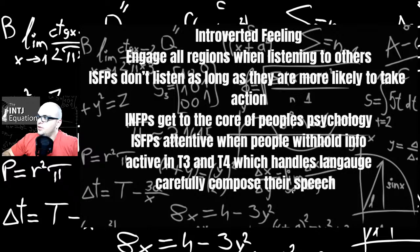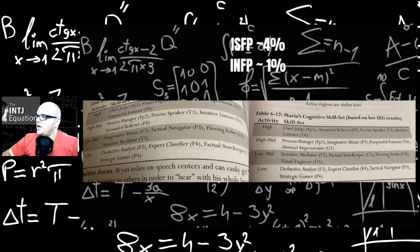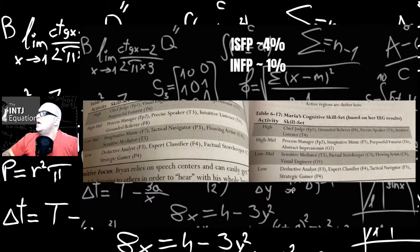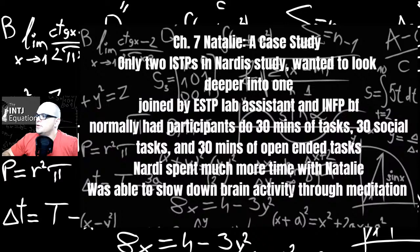Fi, introverted feeling. Engage all regions when listening to others. ISFPs don't listen as long, but they're more likely to stop and take action. INFPs get the cores of people's psychology. ISFPs are attentive when people withhold information. Active in T3, T4, which handles language carefully and compose their speech. They do speak really slow. They're control-focused when it comes to interaction styles. So ISFPs are 4%. I don't agree with that at all. They're probably at least 10-15%. There's a lot of them. I work with a ton of ISFPs every job I go to, and INFPs are 1%. They're probably at least 5 or 6%, like I said before.